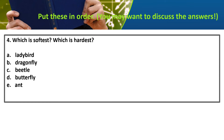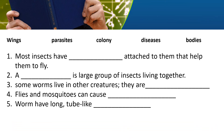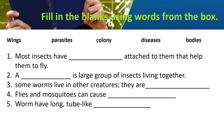What is the ladybird, the dragonfly, the beetle, the butterfly? You have fill-in-the-blanks with these five options. Most insects have a dash attached to them that help them to fly — wings. A dash is a large group of insects living together — colony. Some worms live in other creatures; they are parasites. Flies and mosquitoes can cause diseases. Worms have long tube-like bodies.